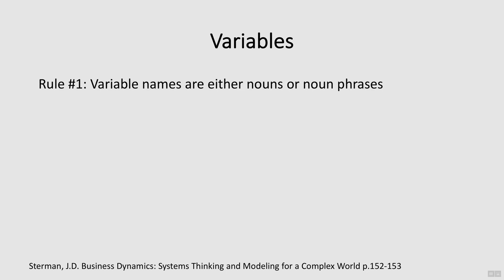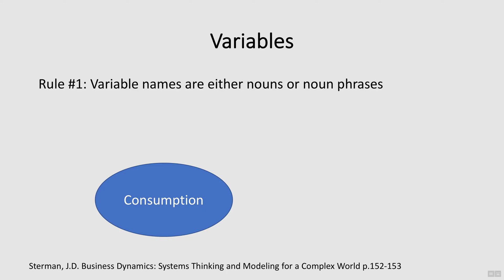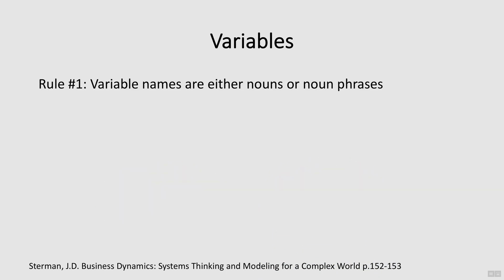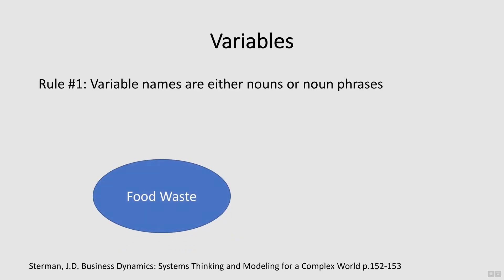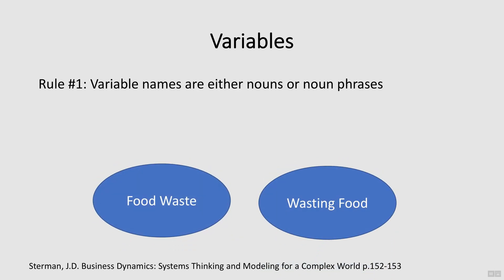Rule number one: variable names are either nouns or noun phrases. For example, you could use the noun consumption, not the verb consuming. Another example is food waste instead of wasting food.